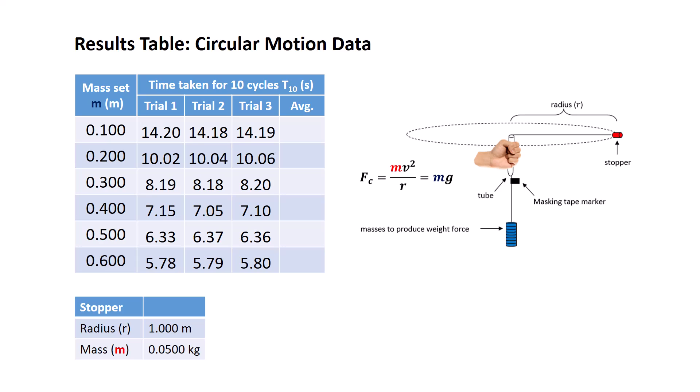Let's now use Excel spreadsheet to analyze our results. First of all, you can see in our table we have the mass set, and I've used a dark blue m to represent the mass of the mass set, whereas below that table we have data referring to the rubber stopper, its radius of one meter, and its mass of 50 grams or 0.05 of a kilogram. I've used the little red m to represent the mass of the rubber stopper so I don't get the two m's confused.